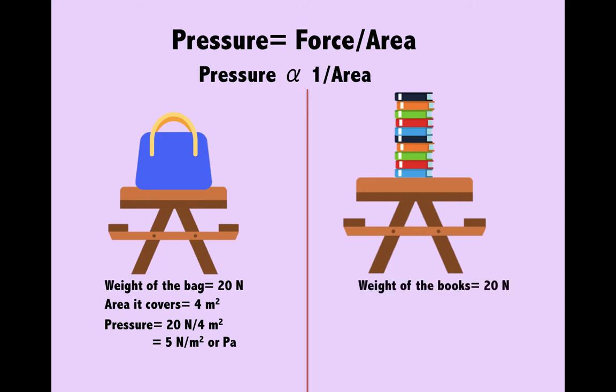Now let's come to the books. The weight of the books is again equal to the weight of the bag and is 20 Newtons. But the area it covers is really less, it's just 2 meter square. Now the pressure again can be calculated the way we did before. That is force divided by area, 20 Newtons divided by 2 meter square. That gives us 10 Newtons per meter square or 10 Pascal.